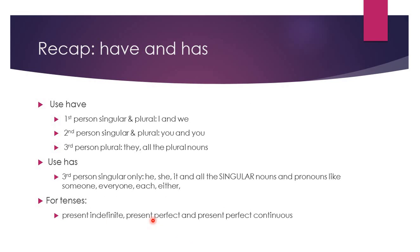So let's recap what we have learnt today. We use 'have' with first person singular and plural (I, we), second person singular and plural (you), third person plural (they), and all other plural nouns and pronouns. We use 'has' only with third person singular — he, she, it, and all singular nouns and pronouns like 'someone,' 'everyone,' 'each,' 'either.' And these verbs are used in three tenses: the simple present tense, the present perfect tense, and the present perfect continuous tense.